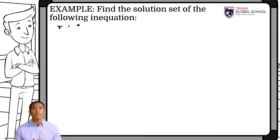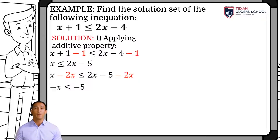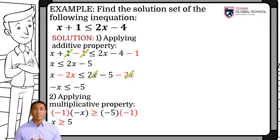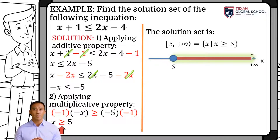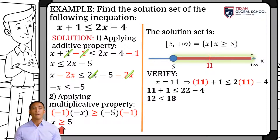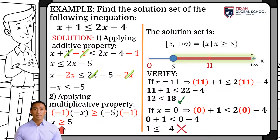In this example, we will group like terms on each side of the inequality. To the left side, we will send the linear terms, and to the right side, the independent terms. We will then apply the additive property to cancel the 1 from the left side, and repeat the process to cancel the 2x from the right member. Adding like terms and simplifying results negative x less than or equal to negative 5. So we multiply by negative 1 on both sides of the inequality, which implies that the sign needs to be reversed, resulting in x greater than or equal to 5. We then use set builder and interval notation to represent the solution set. We verify by proposing values within the interval; for example, if x is equal to 11, the inequality is true, since 12 is less than or equal to 18. If we propose a value outside the solution interval, such as x equal to 0, substituting and simplifying results that 1 is not less than or equal to negative 4.